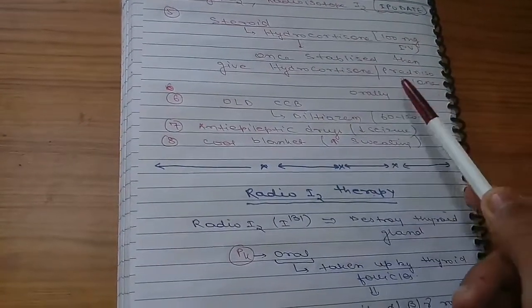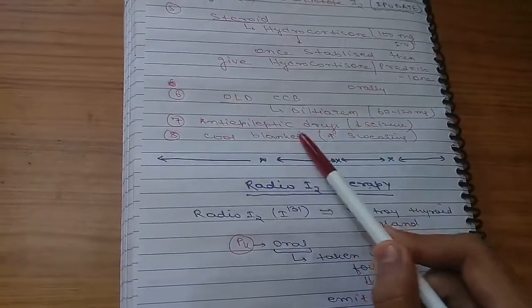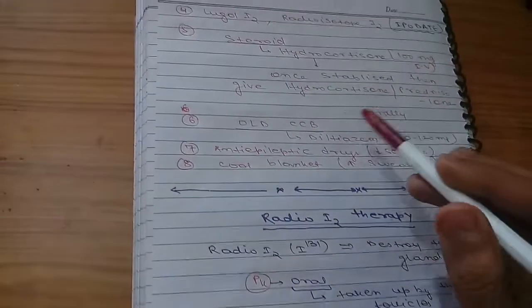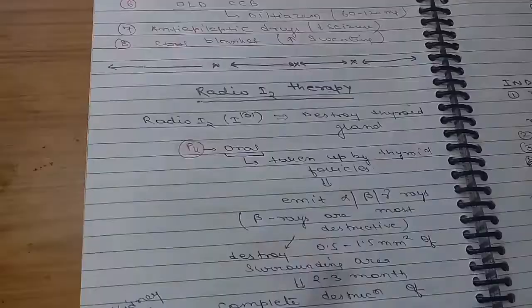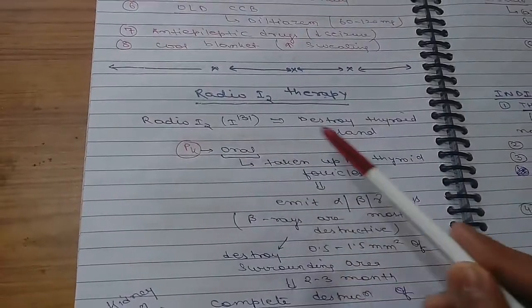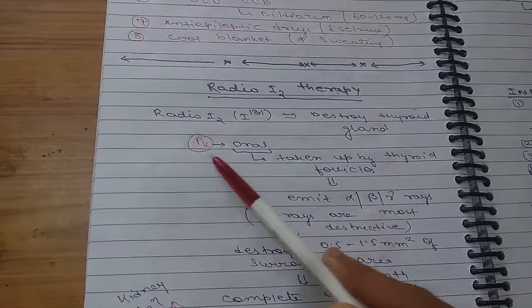You can also administer calcium channel blocker, antiepileptic drugs for decreasing seizure, cool blanket for decreasing sweating. This is the treatment of thyrotoxicosis. Now discussing radioiodine therapy. Radioiodine can destroy thyroid gland, so it can be used in destroying thyroid gland.